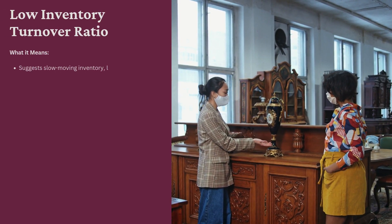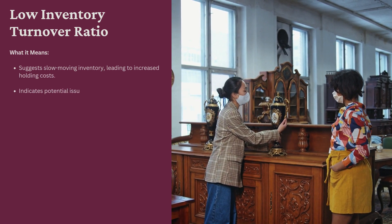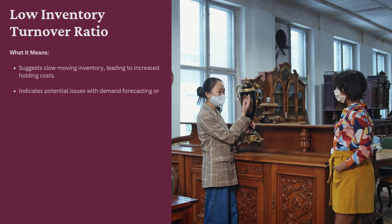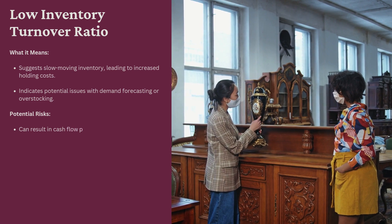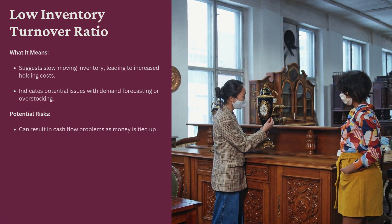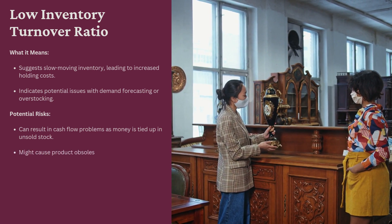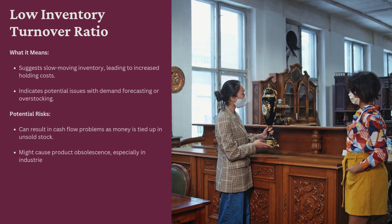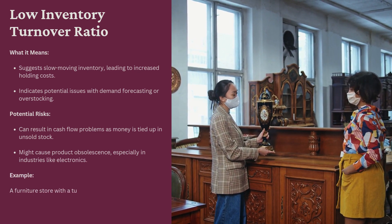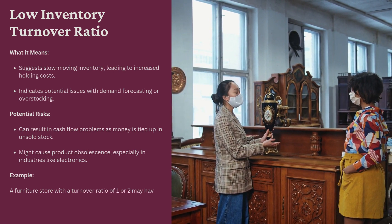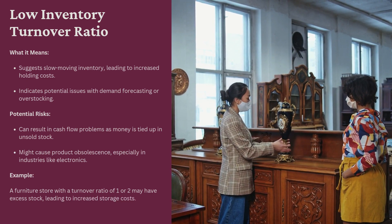Low inventory turnover ratio: suggests slow-moving inventory, leading to increased holding costs, and indicates potential issues with demand forecasting or overstocking. Potential risks: can result in cash flow problems as money is tied up in unsold stock, and might cause product obsolescence, especially in industries like electronics. Example: a furniture store with a turnover ratio of 1 or 2 may have excess stock, leading to increased storage costs.